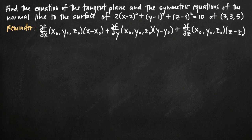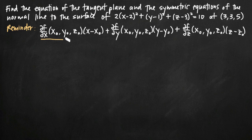As a reminder, I've written the formula for the equation of the tangent plane. There are really just three components to it. The first is the partial derivative of f with respect to x evaluated at the point (x₀, y₀, z₀) — our given point (3, 3, 5). We'll take the partial derivative with respect to x, y, and z each evaluated at that point, which gives us the vast majority of our formula.